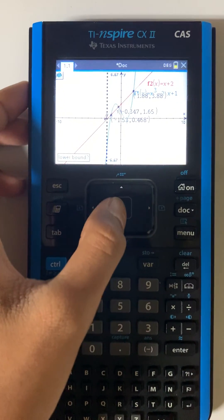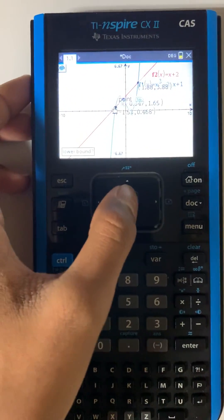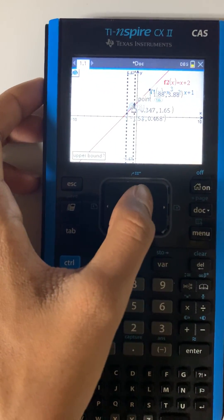You'll then press the first intersection point, then the second one.